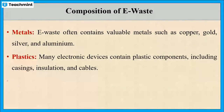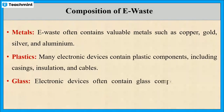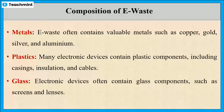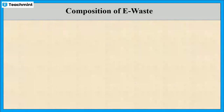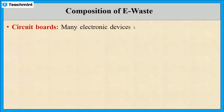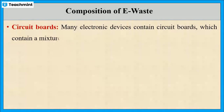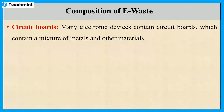Electronic devices also contain glass components such as screens and lenses. Many electronic devices contain circuit boards, which hold a mixture of metals and other materials such as arsenic, cadmium, chromium, lead, mercury, and other toxic chemicals.